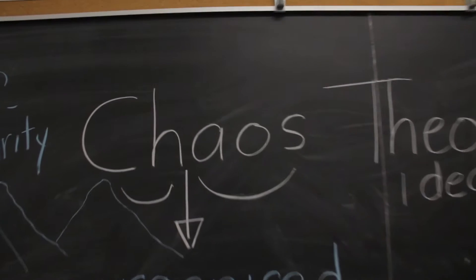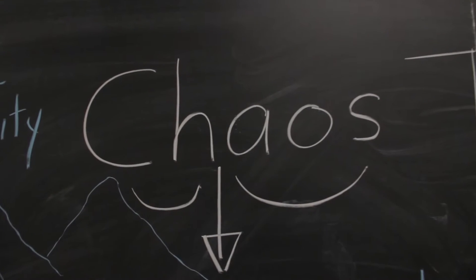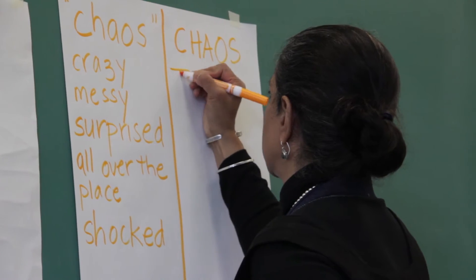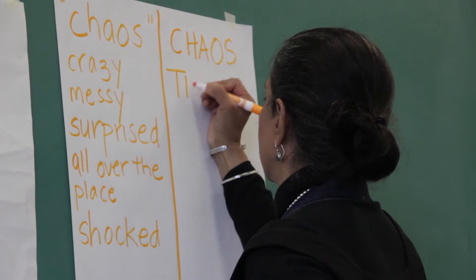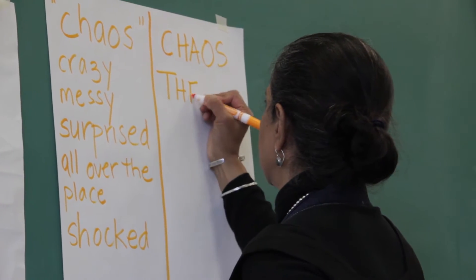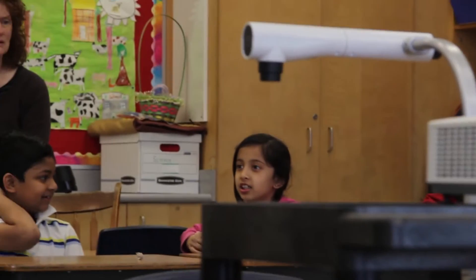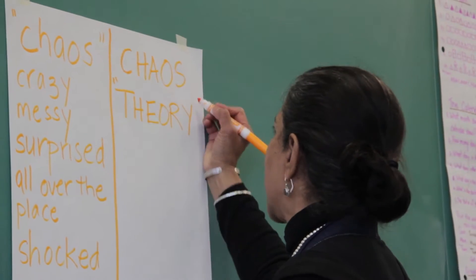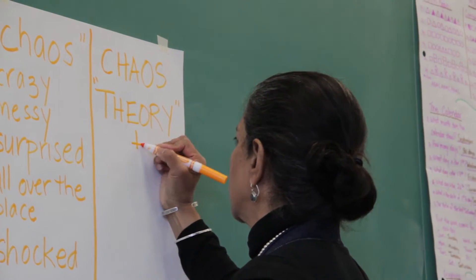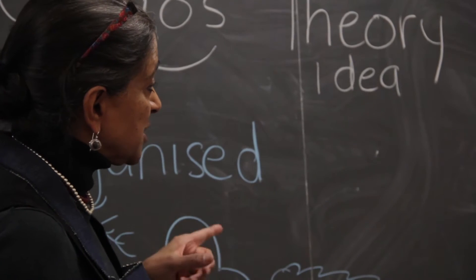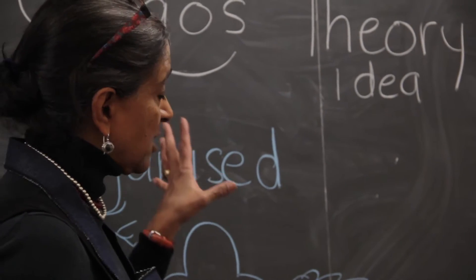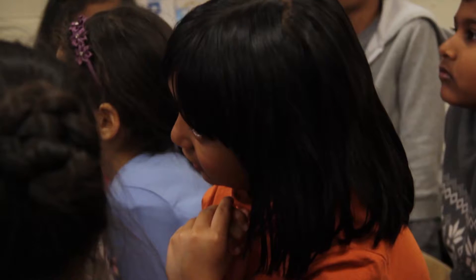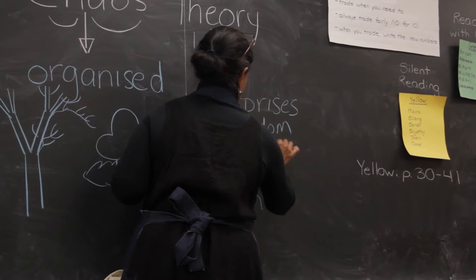When you use the word chaos in science, they actually add another word to it: theory. Anybody know what a theory is? A theory is a guess — a good guess based on something you know. One of the first principles of chaos theory is surprises and random organization.